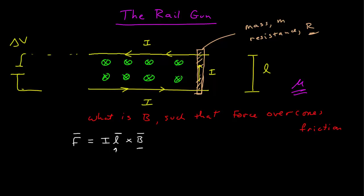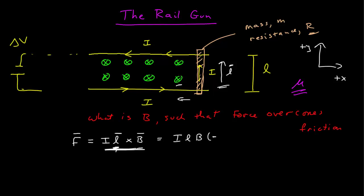Let's use the right-hand rule to evaluate this cross product. You can't see me do the right-hand rule, but I'll describe it. The direction of the current through the bar is in this direction, and the magnetic field is then into the page. If I take my hand and point it in the direction of L, and then flip it so it goes into the page, my thumb is then going to point to the left. L and B are both at 90 degrees, so the cross product is then simply the product of the magnitudes. If we have a coordinate system with plus x and plus y, this would be in the negative i-hat direction, or we could just say ILB to the left.